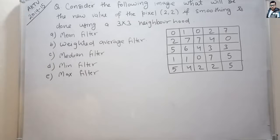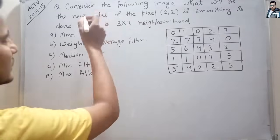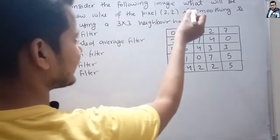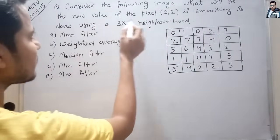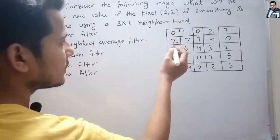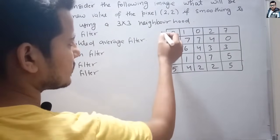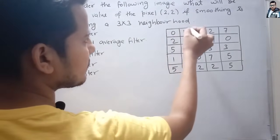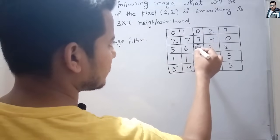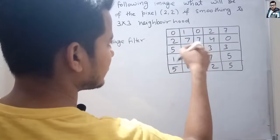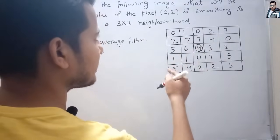Hi friends, let's see this question. This was asked in GATE CS 2015. The question is, consider the following image. What will be the new value of the pixel at position 2,2? Here the coordinates are 0,1,2 and 0,1,2, so we have to find the new value of this pixel.